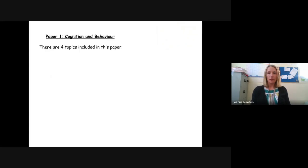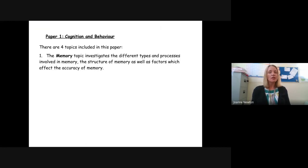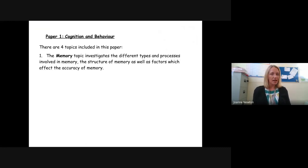Paper one covers the first four topics. The first one is memory, where we look at the different processes in memory, what the structure of memory is like, as well as factors that affect our memory — things like emotion, interference, and reasons why we might forget certain information.